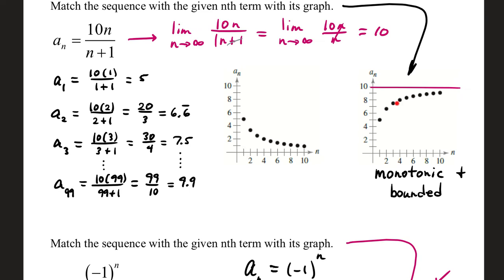It turns out that this graph is monotonic because it's increasing every time, but it's also bounded because it'll never get higher than 10. Why is that? If we take our nth term and we apply a limit as n goes to infinity, our limit is 10. And that tells us that our graph is bounded above by 10, and it's monotonic because each value increases along the way.